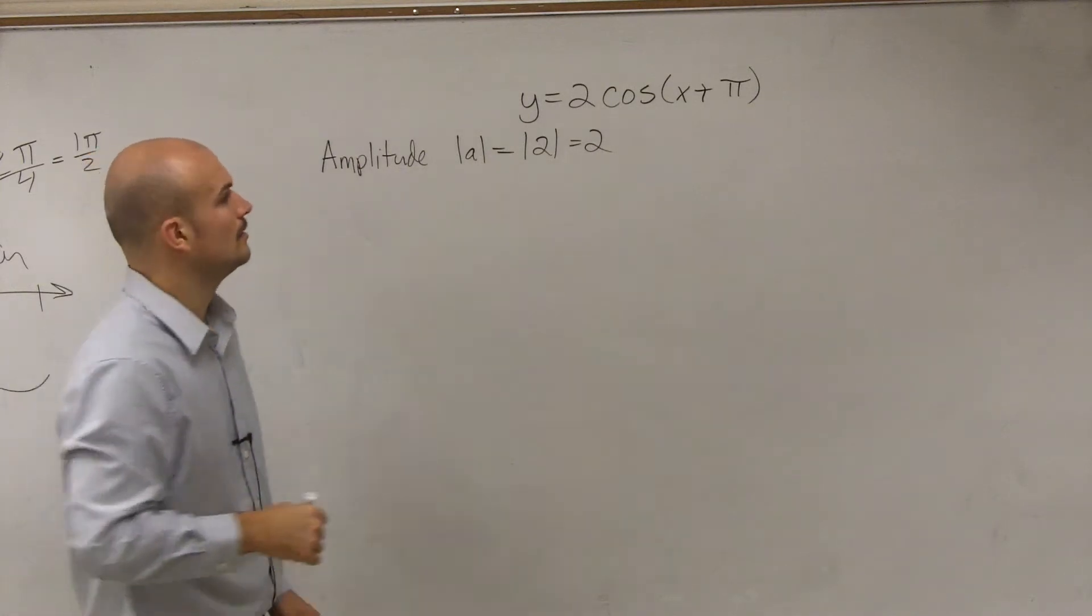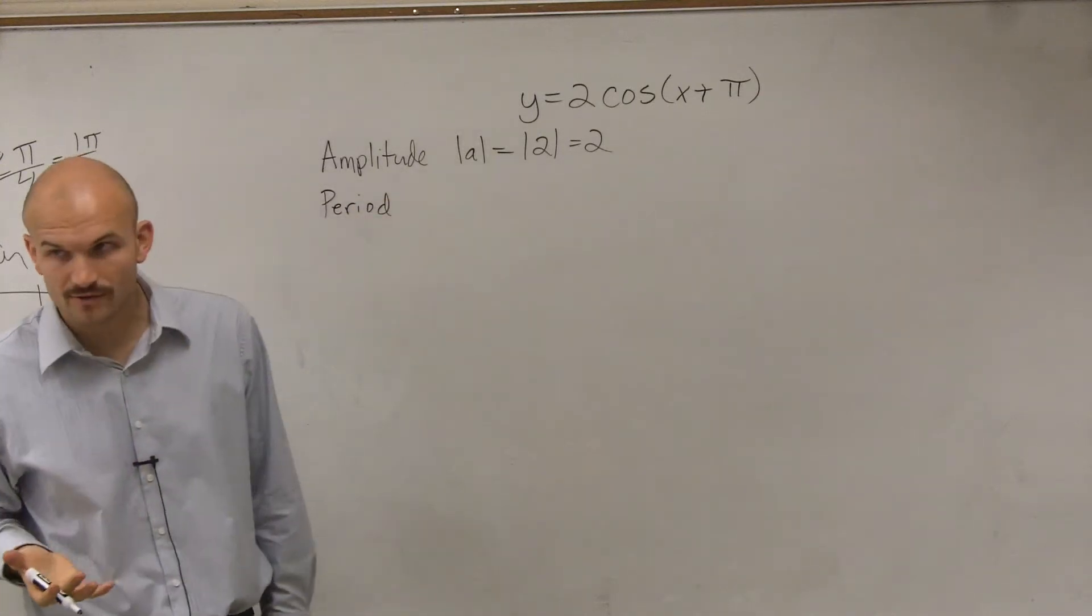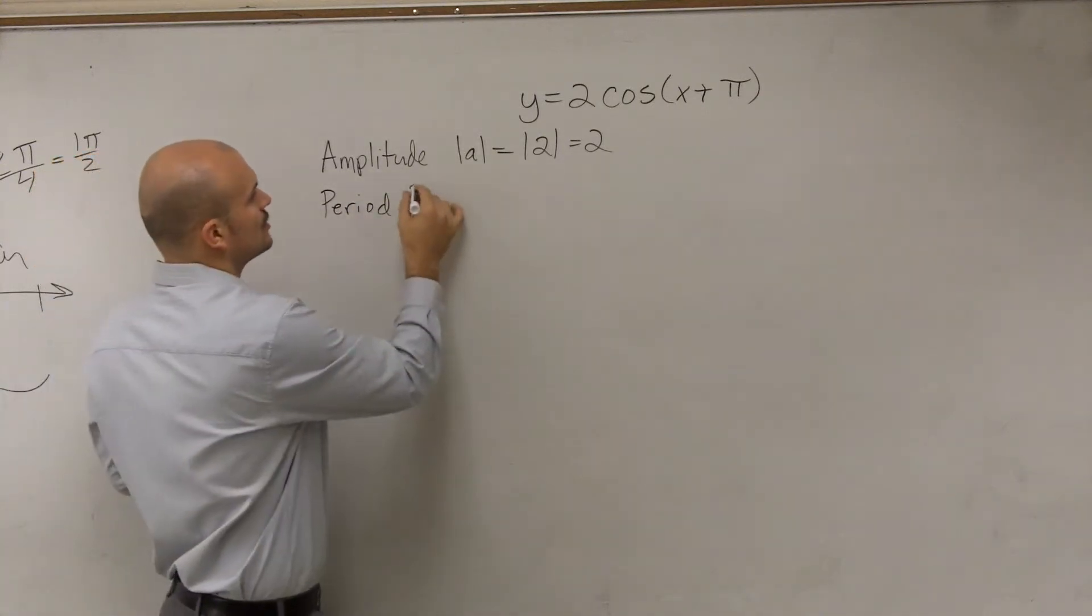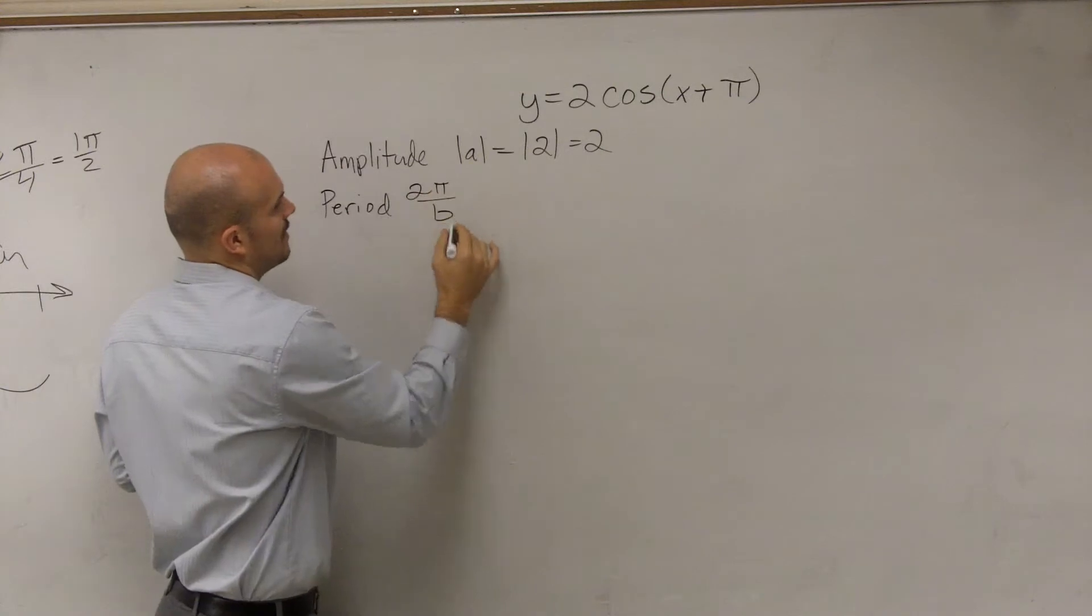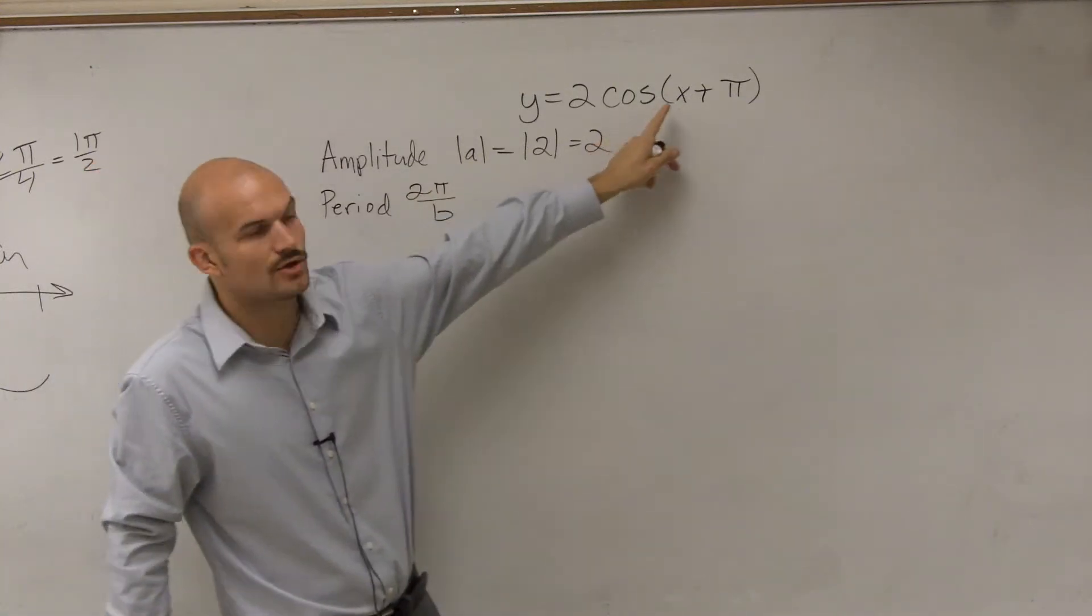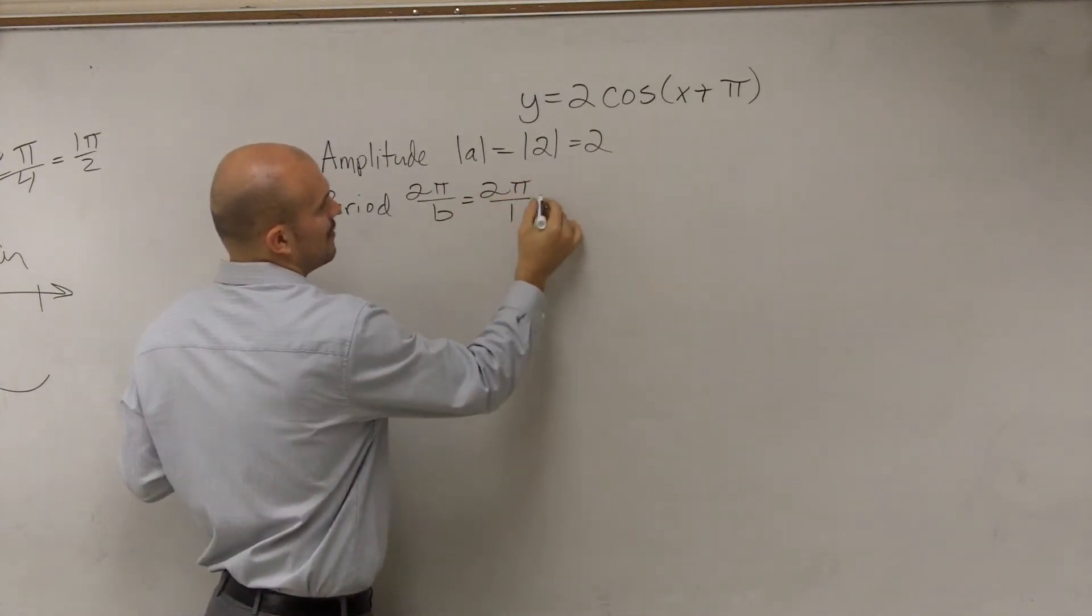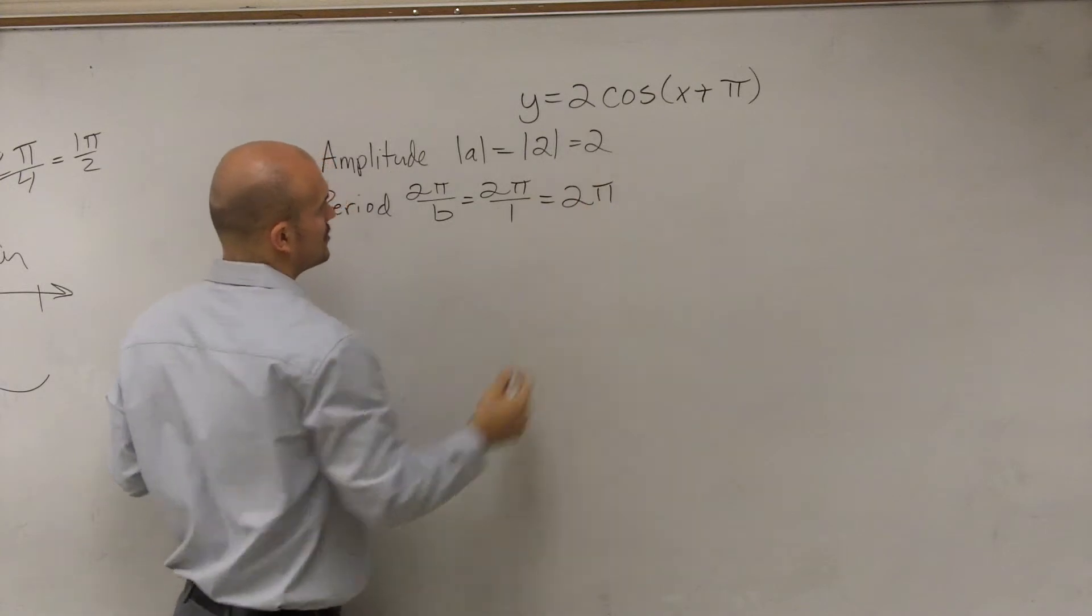Alright, the next one is going to be your period. Our period, remember, is going to be 2π divided by b, where b is going to be your coefficient of x. Well, in this case, our coefficient of x is 1, so therefore our period is 2π divided by 1, which is 2π.